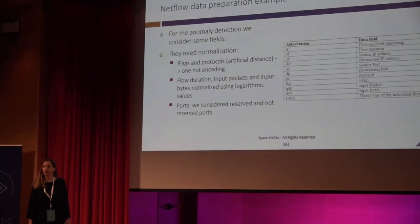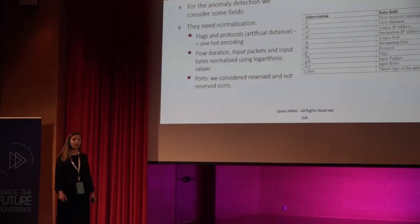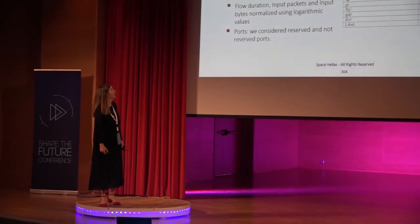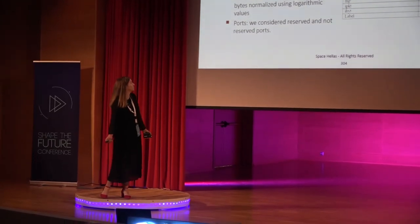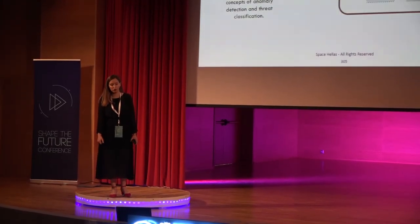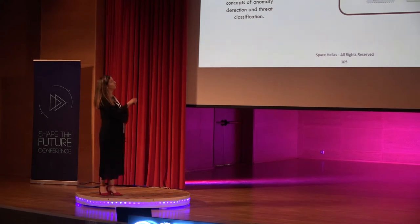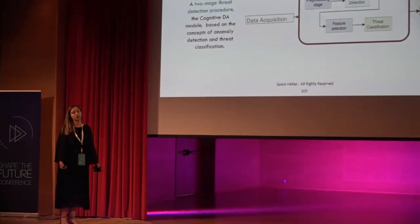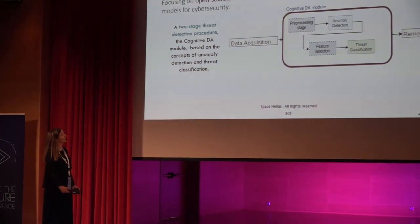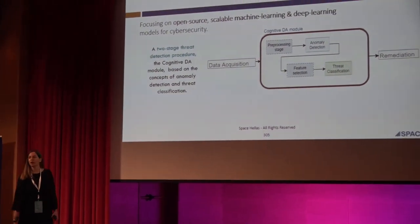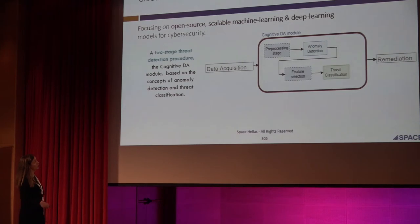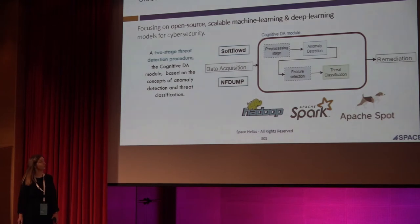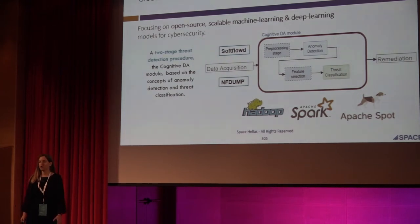Because data can be huge, we do some clearance and normalization. For flags and protocols, we have an encoding; for input packets and bytes, we use logarithmic values. We end up having a module based on the concept of anomaly detection and threat classification. We get the data, pass them through the module, and end up with remediation. To do this, we use NFDAB software, Hadoop, Spark, and Apache Spot.